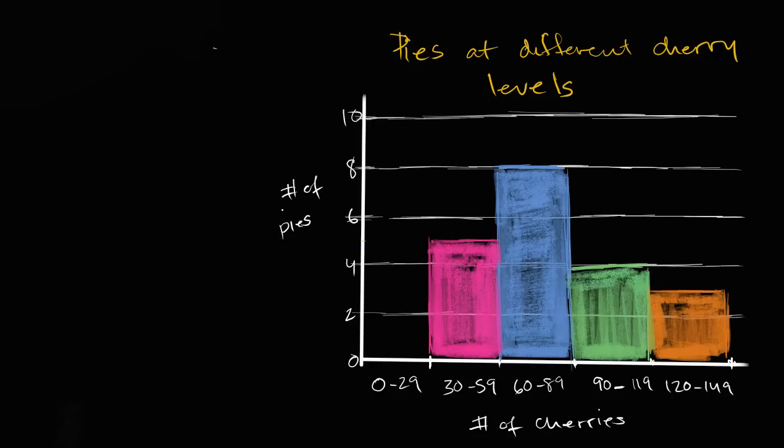So what you're curious about is what is the distribution? How many of the different types of pies do you have? How many pies do you have that have a lot of cherries? How many pies do you have that have very few cherries? How many pies are in between?